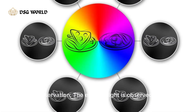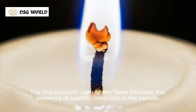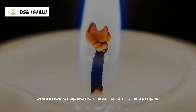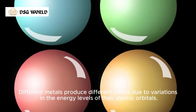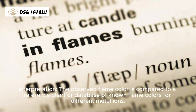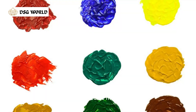Color observation. The emitted light is observed visually. The characteristic color of the flame indicates the presence of specific metal ions in the sample. Different metals produce different colors due to variations in the energy levels of their atomic orbitals. Interpretation: the observed flame color is compared to a reference chart or database of known flame colors for different metal ions. By matching the observed color to the colors associated with specific metals, the presence of those metals in the sample can be identified qualitatively.